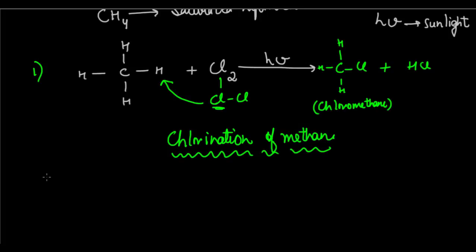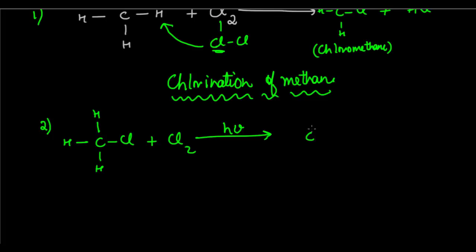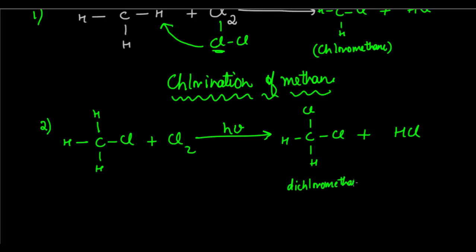This is only one-step substitution. If you actually go further, even more reactions will take place. The CH3Cl is going to again react with Cl2, again in the presence of hν (sunlight), and then you will get CH2Cl2 plus HCl again. CH2Cl2 is dichloromethane.